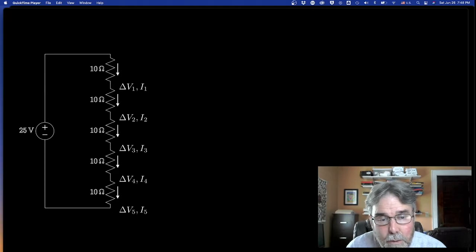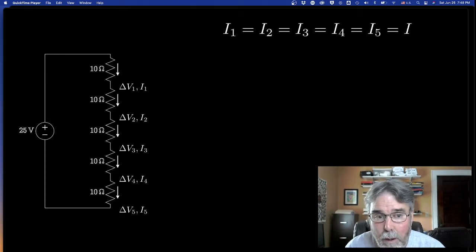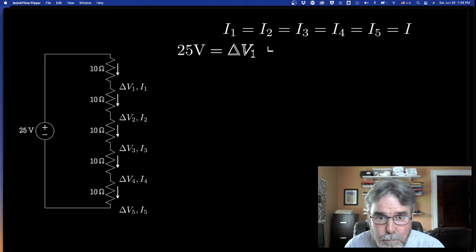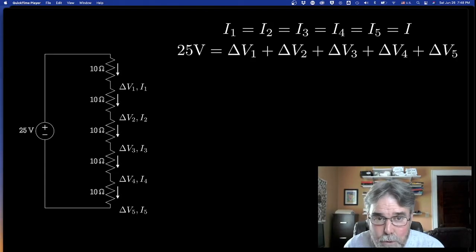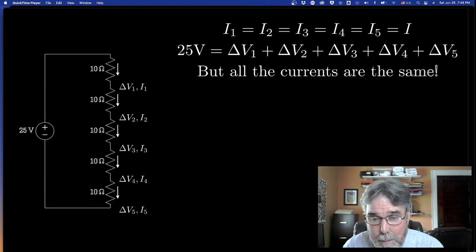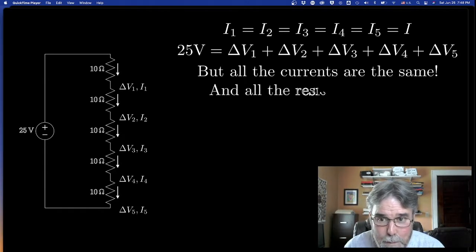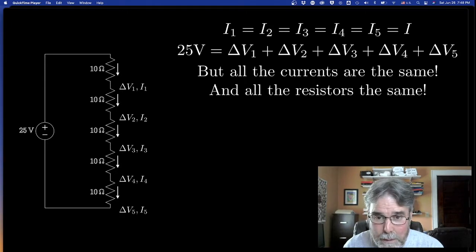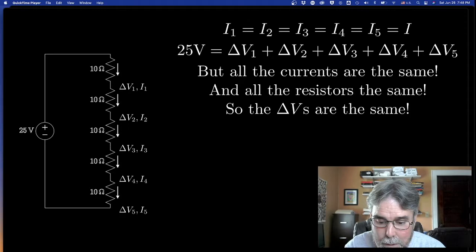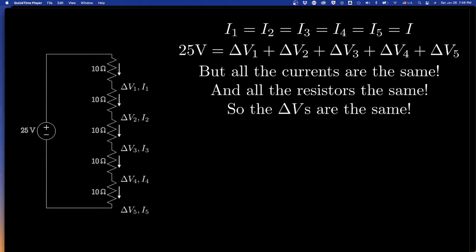So what does that tell you? One thing it should tell you is that the currents all have to be the same — they all have to be the same because they're all connected in series. The other thing that has to be the same: because the voltage drops add up to 25 volts and the resistances are all the same, that means that the voltage drops have to be all the same. So all the delta V's are the same, and the voltage drop across each resistor is just one fifth of the total voltage — 5 volts each.